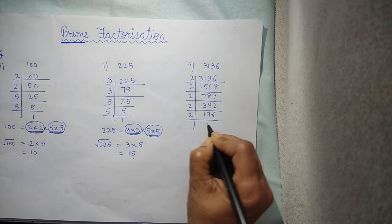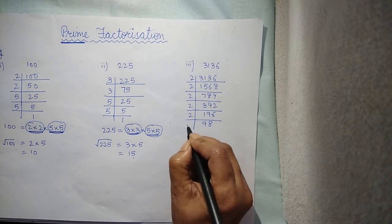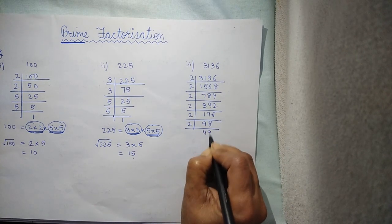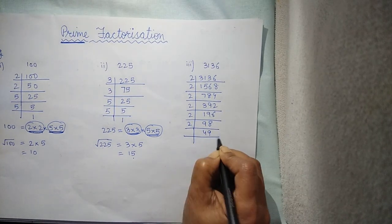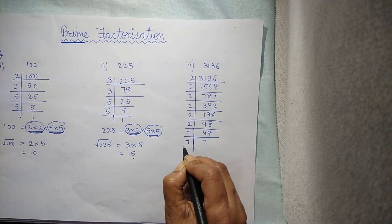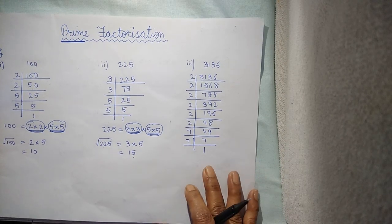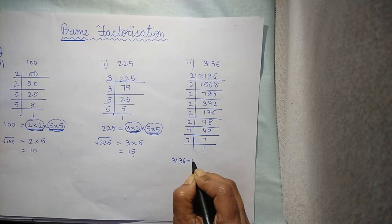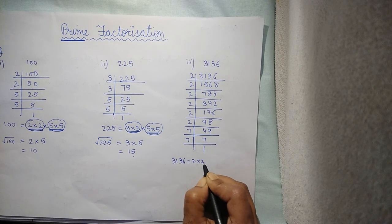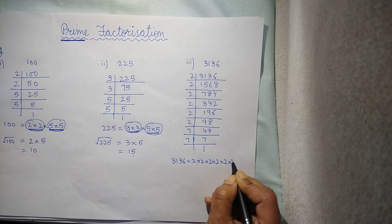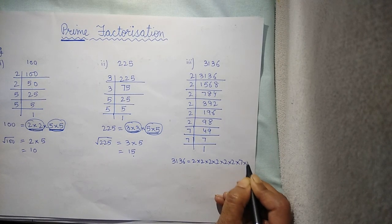Again, 2 into 98, 2 into 49. Again, it goes with 2. Now, with which number? 7. Again, it goes with 7. Now, write it in the form of factors. It will be 2 into 2 into 2 into 2 into 2 into 2 into 7 into 7.